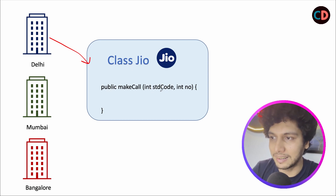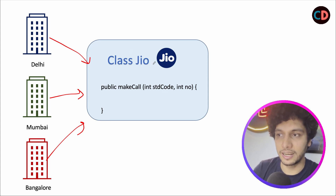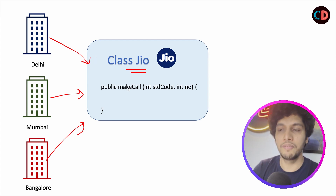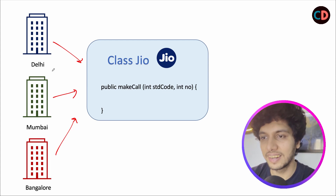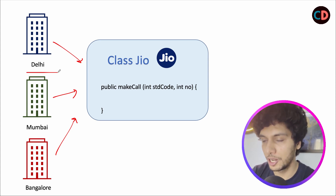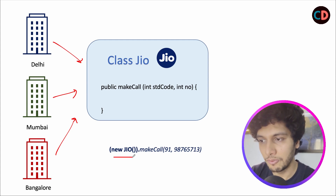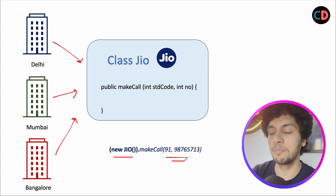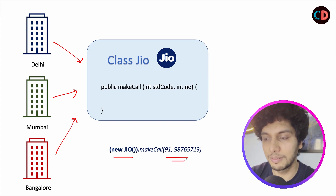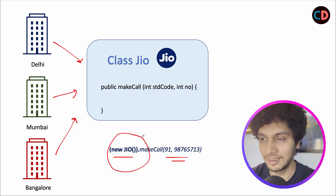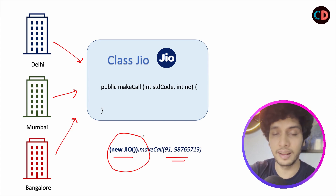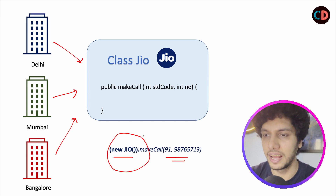We created a class Jio with a make call method that accepts an STD code and number. Across all three buildings of Coding Decoded, we started injecting the Jio class object and invoking Jio.makeCall() whenever there was a requirement to make a call. Consider these three different buildings as three different high-level classes. Wherever there is a need to make a call, you create a new object of the Jio class and invoke the make call method. In a Spring Boot application, this could be an auto-wired singleton instance or a prototype instance.